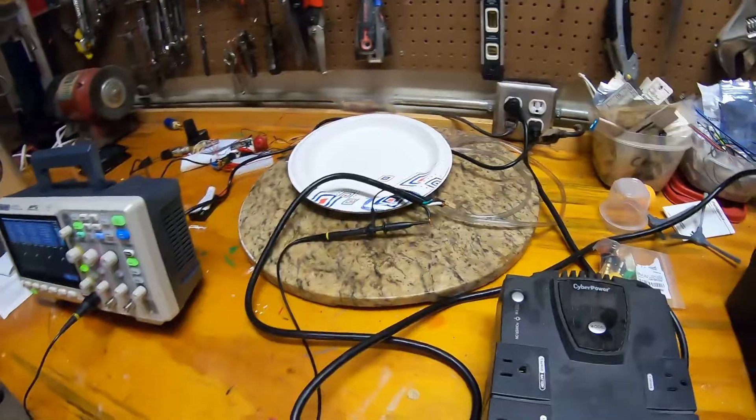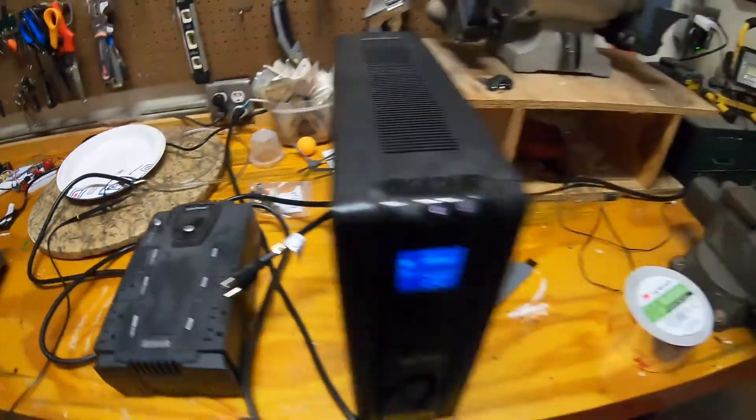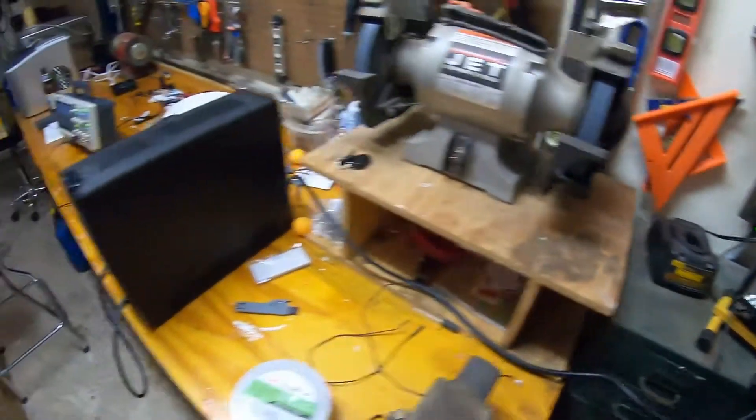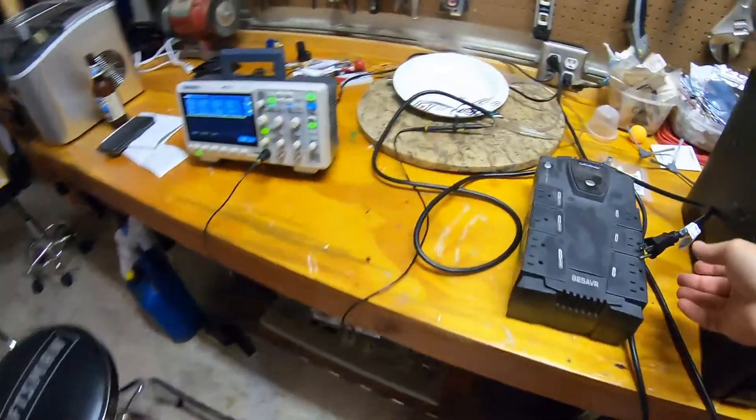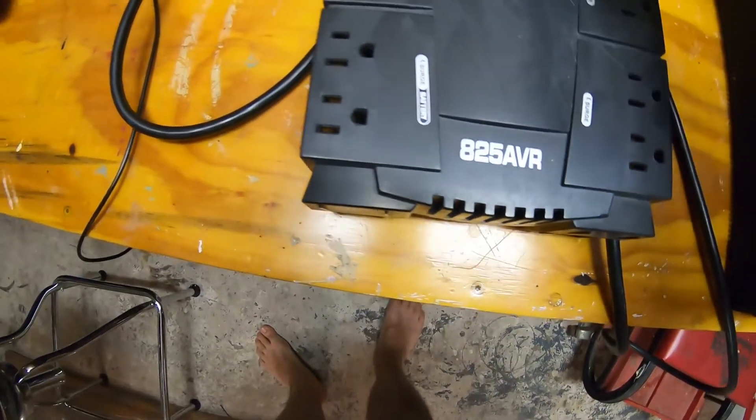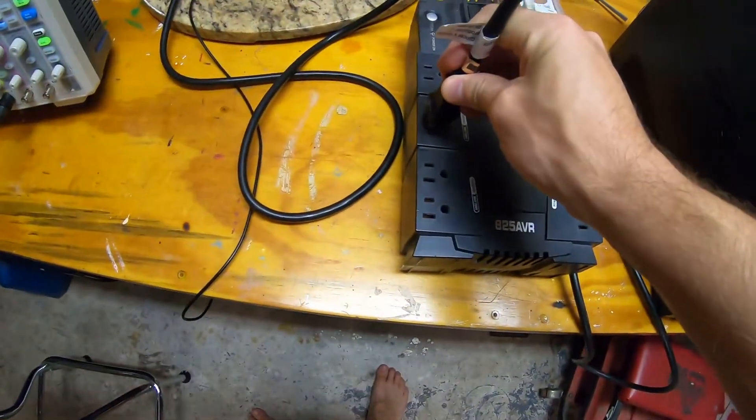Now let's unplug here. Let's go to the cyber power unit. Let's plug this thing back in. Shut the fan off. Okay. Let's go to the cyber power. This is an 825 AVR. Again these are all used. All purchased with my own money. No one's paying me to do this.